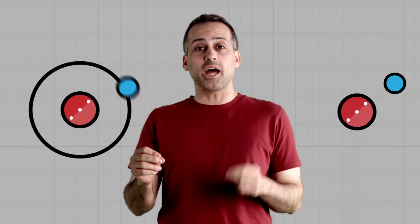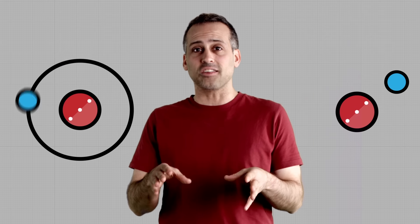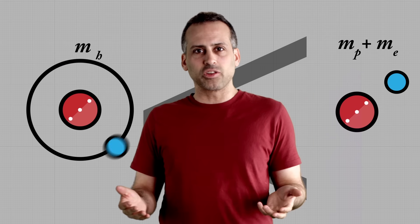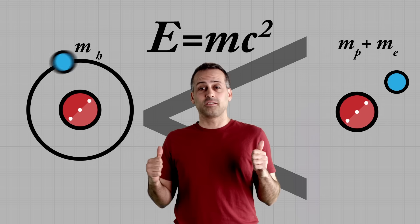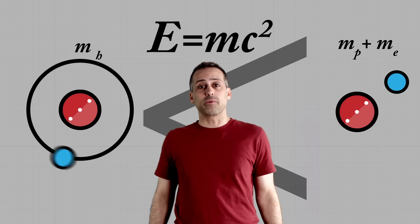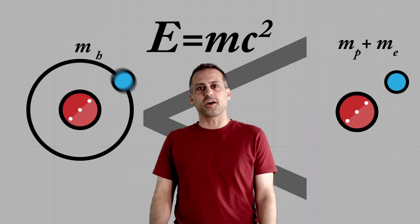A hydrogen atom has less mass than the combined masses of the proton and the electron that make it up. That's right, less. How can something weigh less than the sum of its parts? Because of this. And today, we're going to clarify what the most famous equation in physics really says.